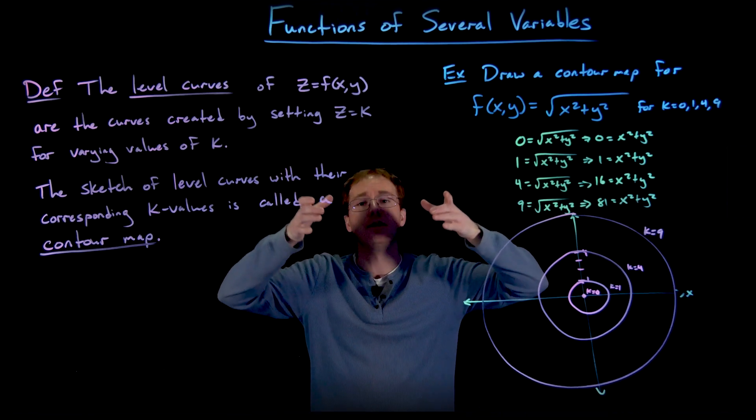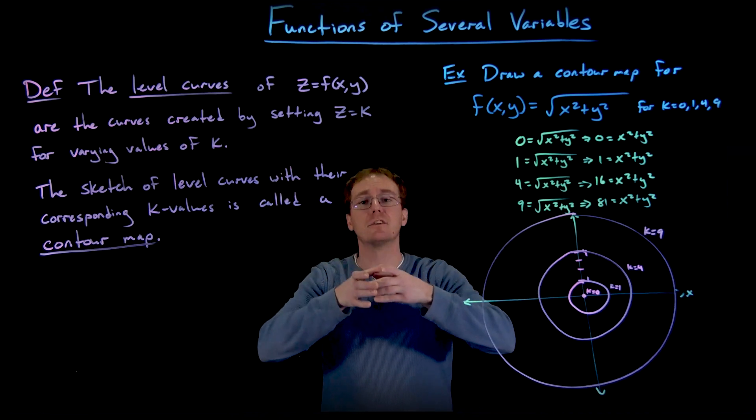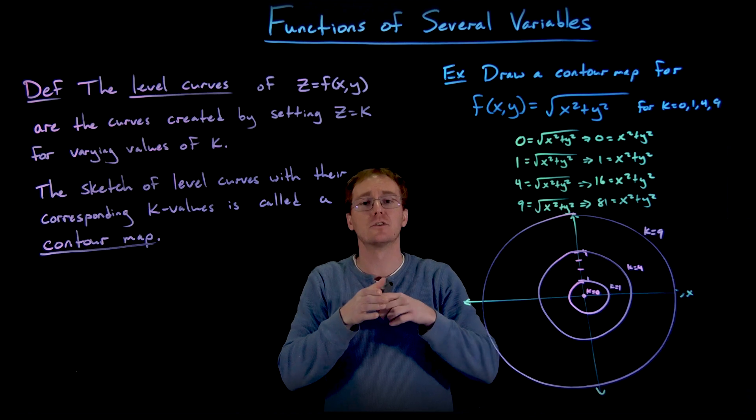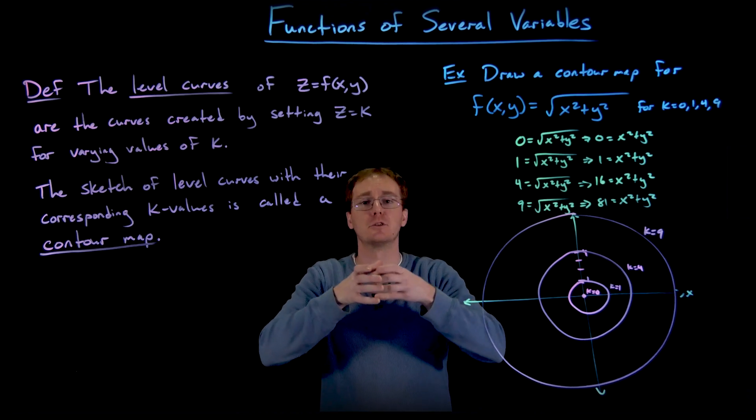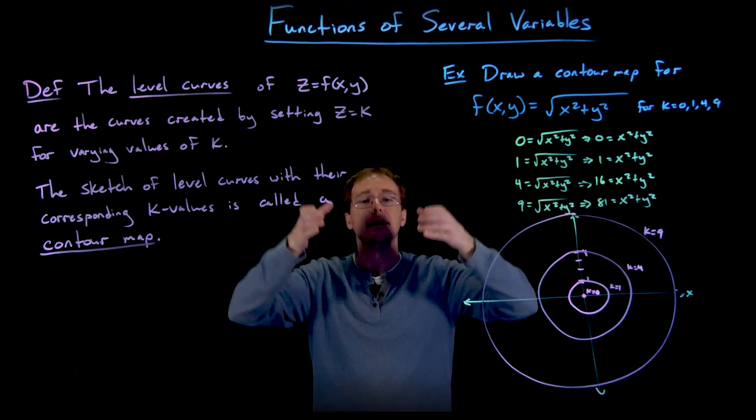And so what we can see from that is for every step of 1 that we take up, the radius of the circle that we are on is increasing by that exact same step size. So there's a linear relationship between the radius and the height that we are at.